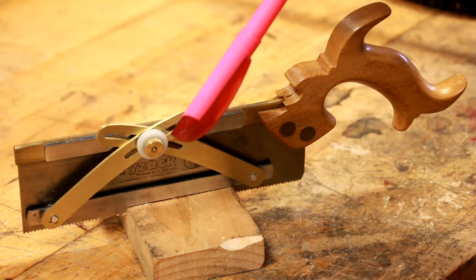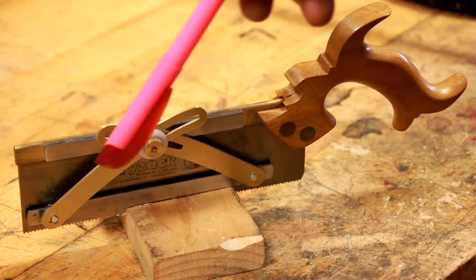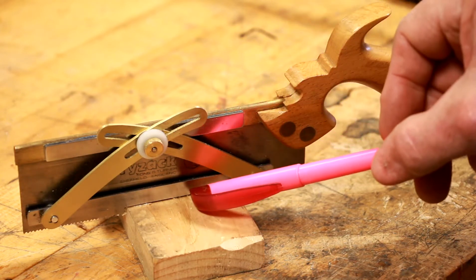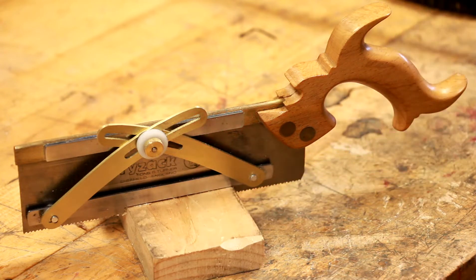Obviously the way it works is you loosen the knurled screw and the two brass bars will articulate and raise and lower the bottom steel plate that sets your depth—for cutting dovetails or depth stops or dado cuts.